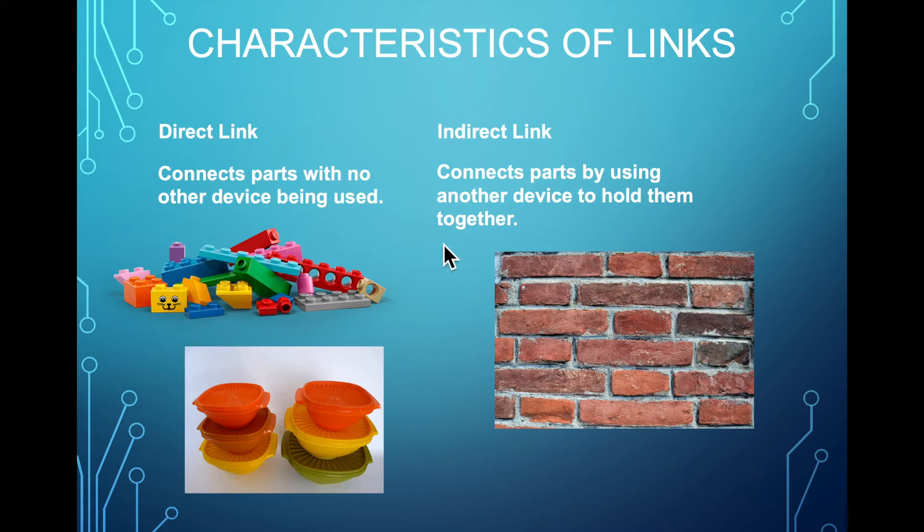Indirect. So an indirect link is when you actually use a substance or another component to hold parts together. So here we have bricks. Well, you need some cement grout to hold them together. Same thing for ceramics, for example. So you need a substance to hold the bricks together. In other systems, it could be glue that's holding things together. It could be nails. It could be screws. So as soon as there is another component that's holding everything together, then it is an indirect link.